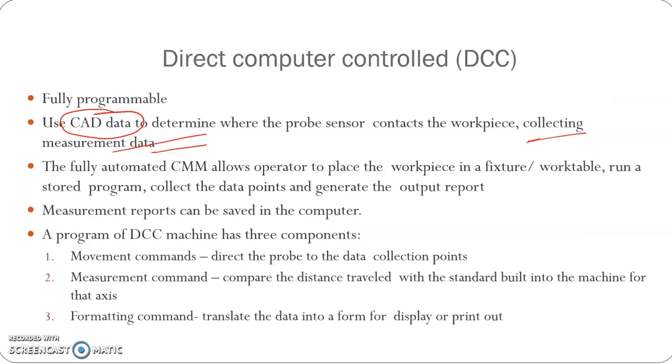In DCC, the sequence of operations may be like this: the operator places the workpiece on a fixture, then runs a stored program. Then the CMM automatically collects the data points and generates the output reports. The program of DCC machine has three components: the movement commands, measurement commands, and formatting commands.